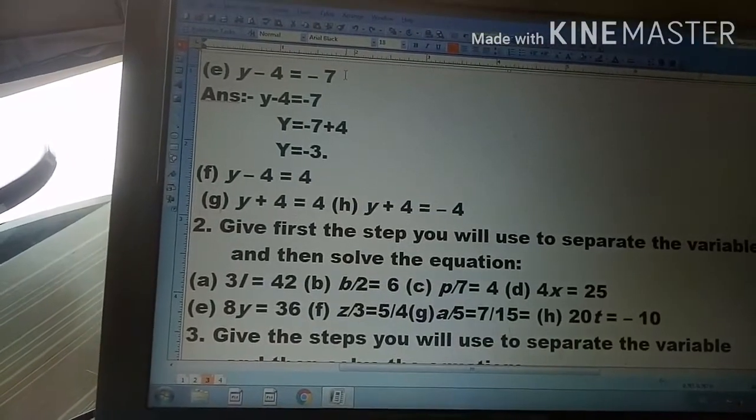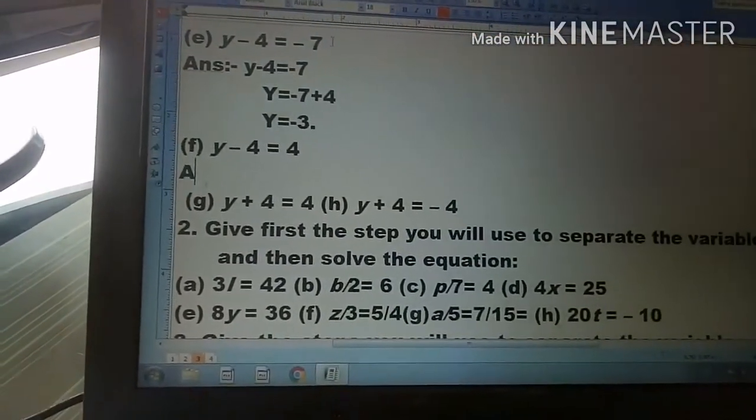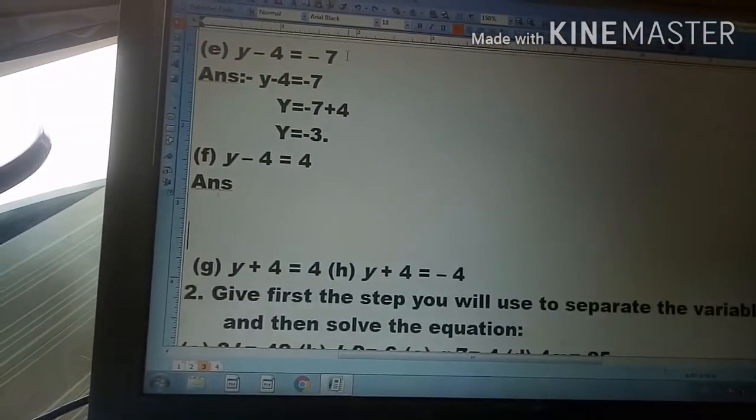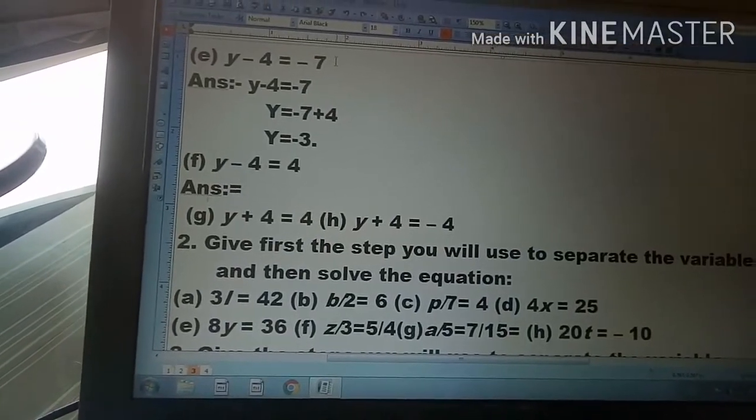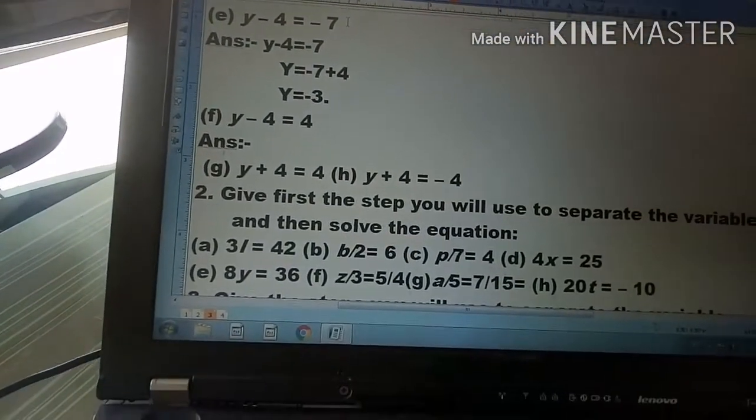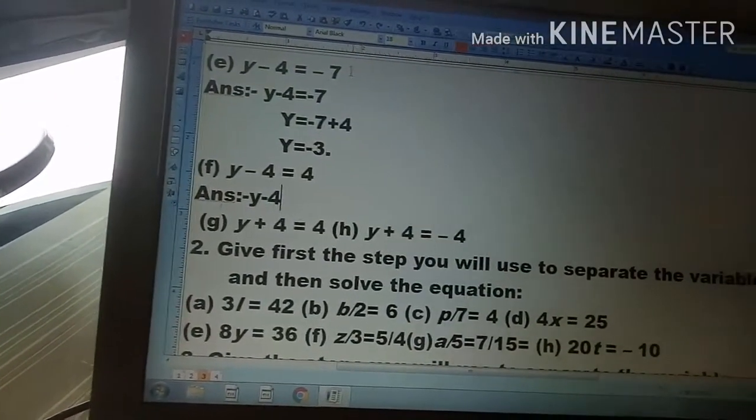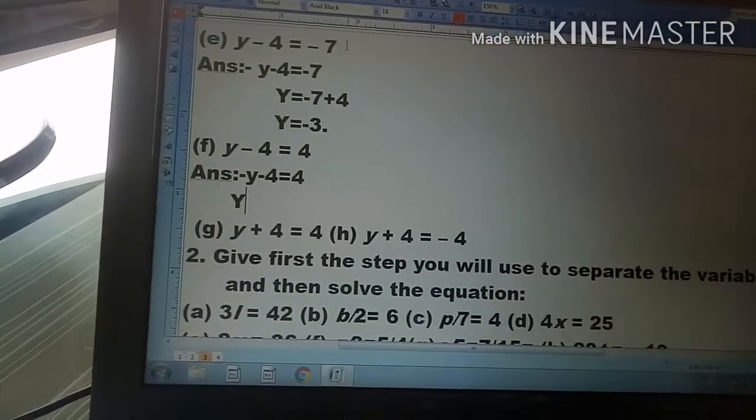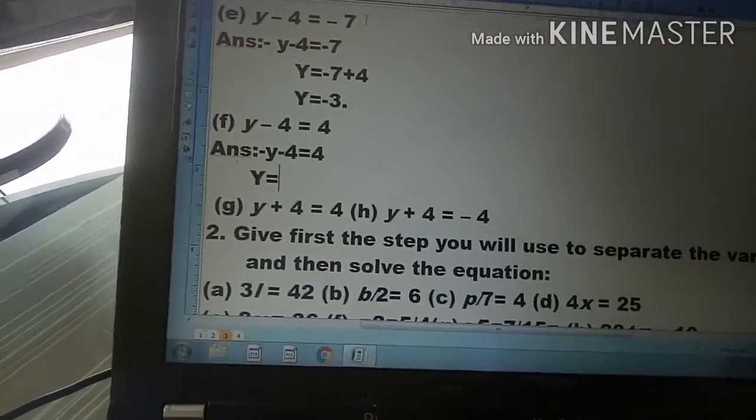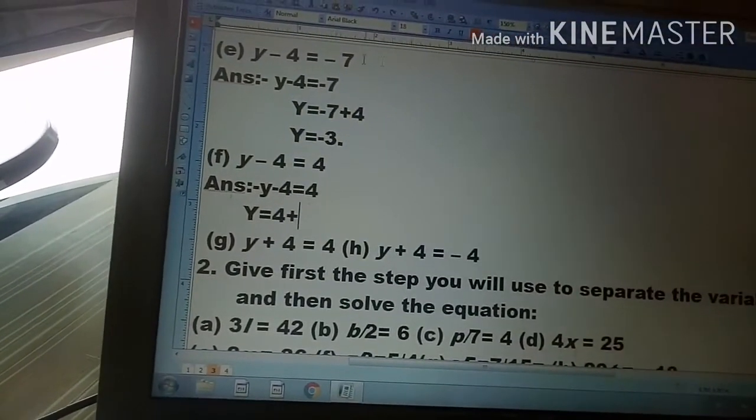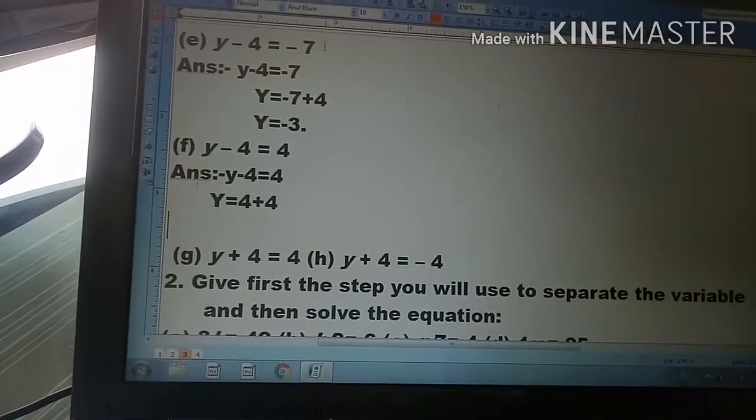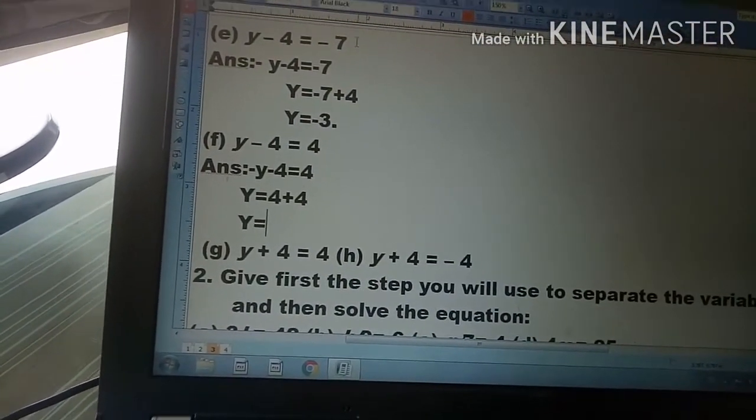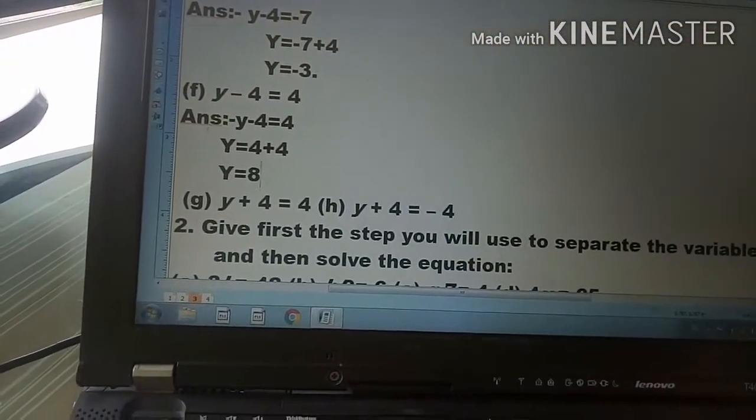Question (f): y minus 4 is equal to 4. When minus 4 moves to the right hand side, it becomes plus 4. So y is equal to 4 plus 4. Therefore y is equal to 8.